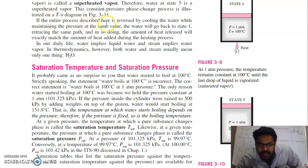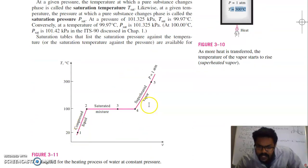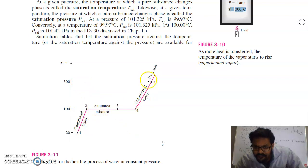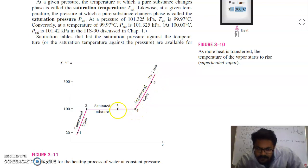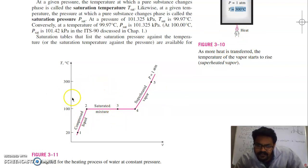The entire process described here can be reversed by cooling the water while maintaining the pressure at the same value, and the water will go back to state 1, retracing the same path. In doing so, the amount of heat released will exactly match the amount of heat added during the heating process. So whatever heat we transferred from state 1 to state 5, if we reverse from state 5 to 4, 4 to 3, 3 to 2, and 2 to 1 — the same amount of heat can be retrieved. This process is reversible.